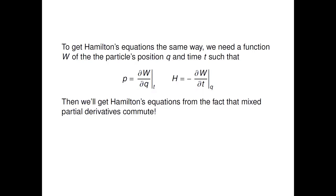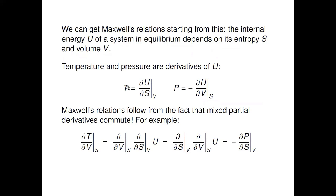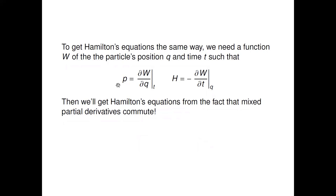So the question is: could we get Hamilton's equations in the exact same way? To do that we need to find a function — let's call it W — of the particle's position q and time t, such that the same kind of equations hold. For Maxwell's relations the key was to express temperature and pressure as derivatives of some function with a minus sign in one of them. We need to find this function W that makes this work, and then Hamilton's equations will fall out of the fact that mixed partial derivatives commute.